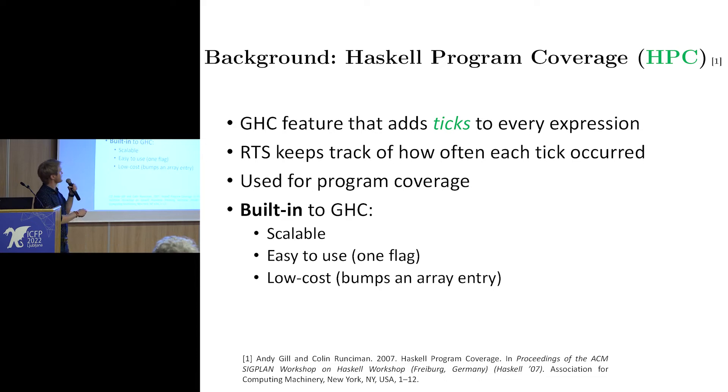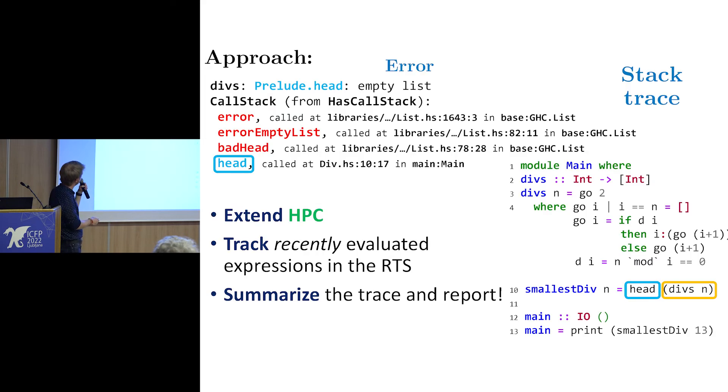Our approach is: let's take the HPC features and extend it a bit. Let's track recently evaluated expressions - I keep italicizing 'recently', I'll explain why later. This is important for errors - if you trace every single expression that got evaluated in a Haskell program, you get a lot of output. Most of it is not really useful.